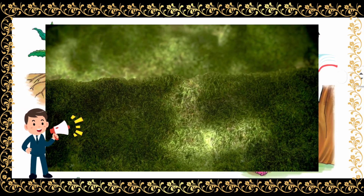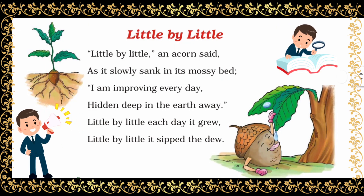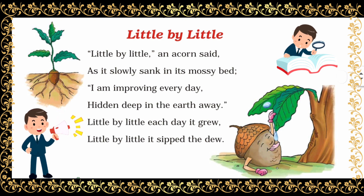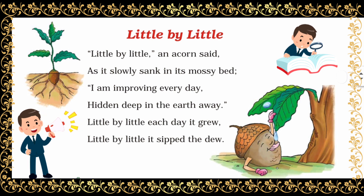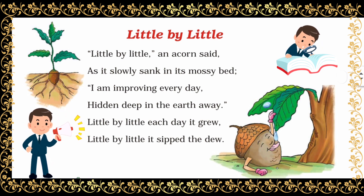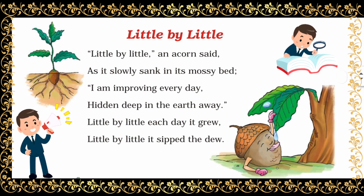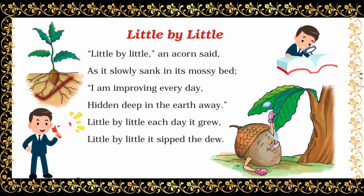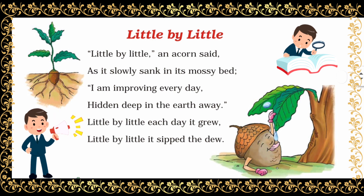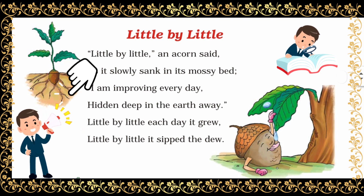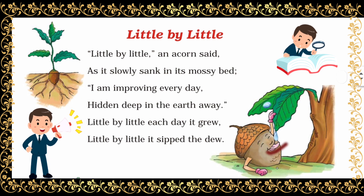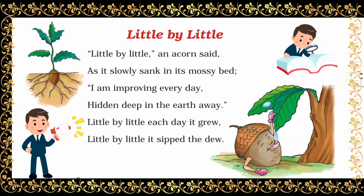Dear children, look at your screen. Here you can see a mossy bed. Moss is a plant that grows in wet places. In this poem, the acorn is saying that it grew slowly. Like we sleep in a bed, seeds also have a bed — that is soil. Slowly it went down into the ground after sowing, and slowly it started growing. The acorn went far down into the earth and hid itself. Underneath the ground, it drank water droplets little at a time, and grew day by day, little by little.